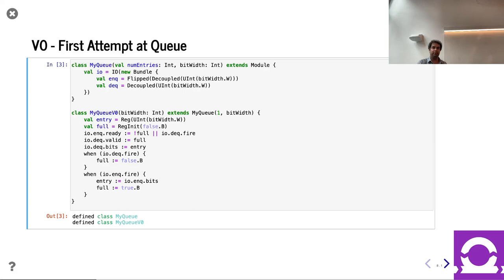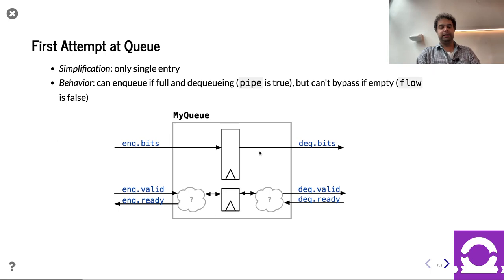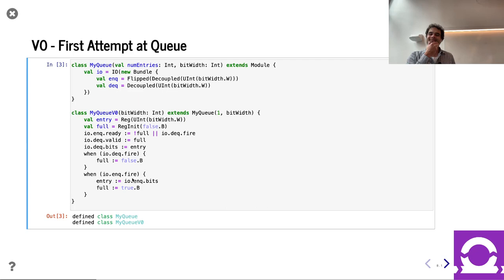We can go ahead and run it. We'll do simulation in just a second. I'll point out that this seems like a super simple queue — we only have one entry. Even just handling all this decoupled signaling, I spent a little time thinking 'is that right?' — it's not totally obvious. But this is about as simple as we can go.